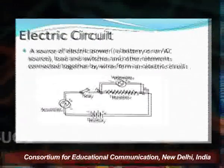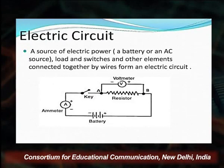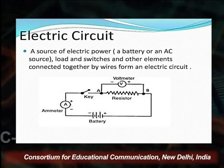The great advantages of electricity are cleanliness, flexibility, efficiency, and easier transmission. What is an electrical circuit? A source of electric power — a battery or AC source — along with a load, switches, and other elements connected together by wires forms an electric circuit. If asked what an electric circuit is, we can say it is a type of arrangement where the battery (electric power), load, switches, and other elements are connected together.